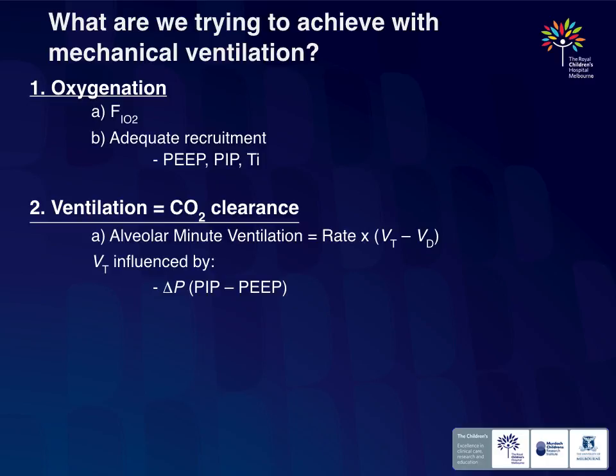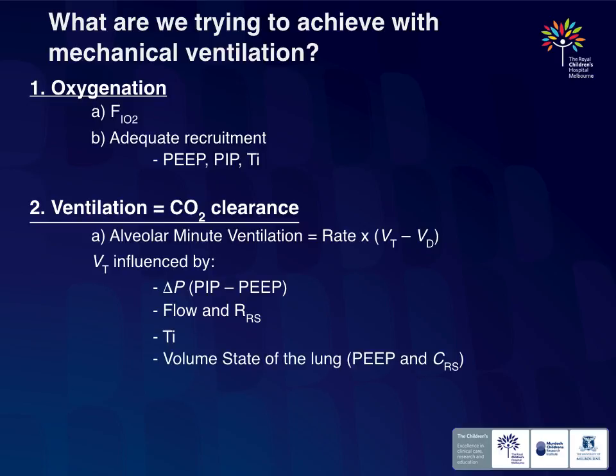Tidal volume in conventional ventilation is influenced by the delta P — the difference between PIP and PEEP — the flow, the resistance of the circuit, the inspiratory time, and the volume state of the lung. Lung recruitment determines minute ventilation. In the diseased lung, particularly the diseased preterm lung, mechanical ventilation is more than just oxygenation and ventilation — it's about not injuring the lung more than it is already injured. It's about lung protection.